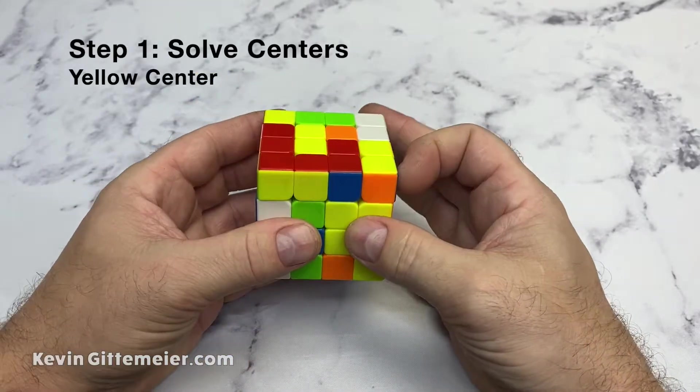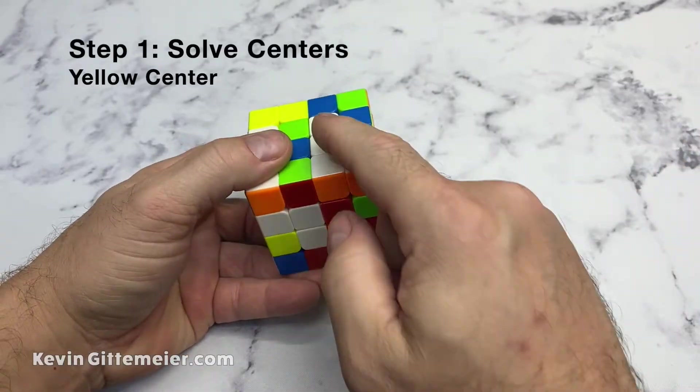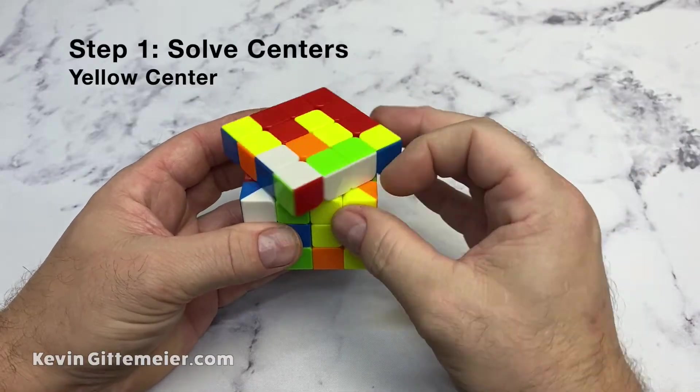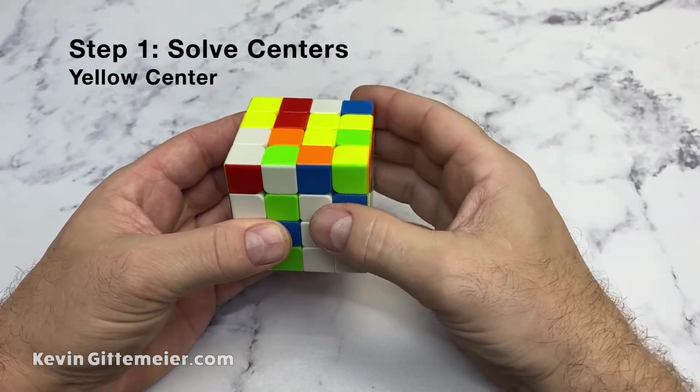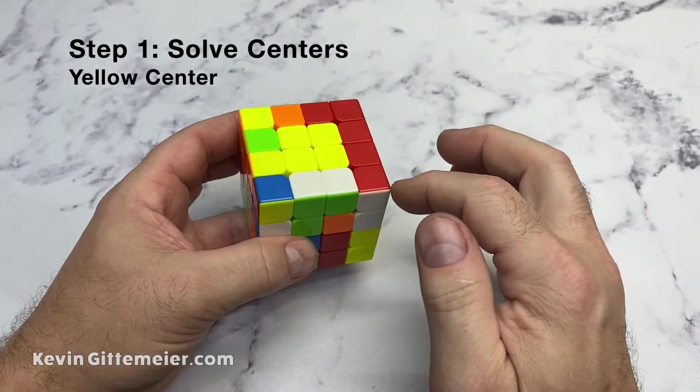So that's a bar there. Now in order to solve my yellow center, I have to do that without messing up my white center that I just solved. And the way to do that is put both bars in the same slice, move that over, and then when I slice back, restoring that, it builds this.